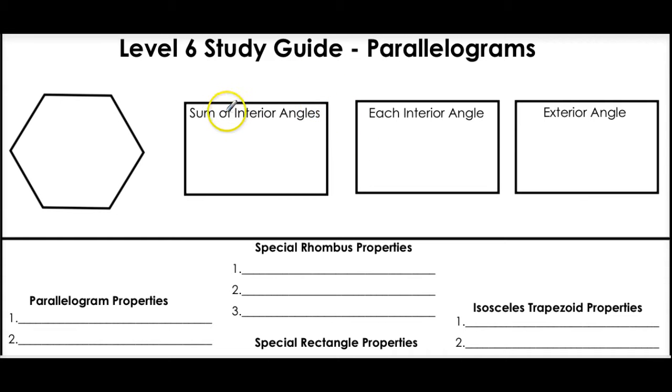The first part of this is being able to find the sum of the interior angles, one interior angle, and the exterior angle of a polygon. These are the formulas you will need to know. To find the sum, you need to know this formula. It's just n minus 2 times 180. That is how you find the sum of the interior angles.